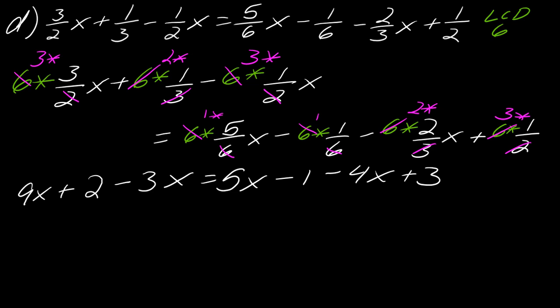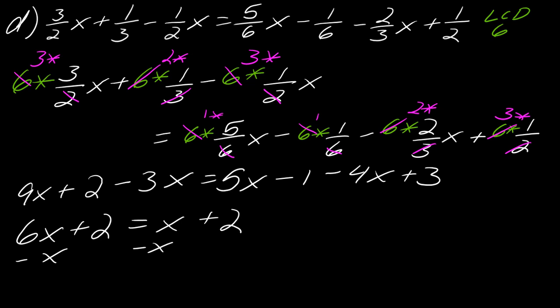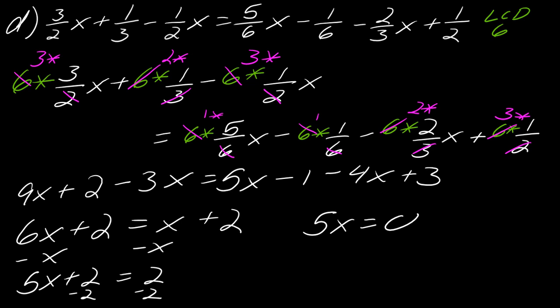Working this out: 9x minus 3x is 6x, plus 2, on this side — and on the other side this becomes x plus 2. Subtracting x from each side: 5x plus 2 equals 2. Subtracting 2 from each side: 5x equals 0. Dividing both sides by 5 gives x equals 0.